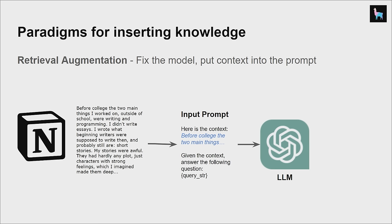If we do a quick refresher in terms of paradigms for how you actually get language models to understand data that hasn't been trained over, there are really two main paradigms. One is retrieval augmentation, where you fix the model and create a data pipeline to put context into the prompt from some data source — like a vector database, unstructured text, or SQL database — into the input prompt of the language model.